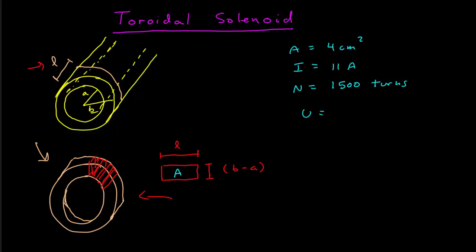The energy stored in an inductor is one half times the inductance times the current through the inductor squared. We want to first find the self-inductance of the solenoid. The self-inductance is the number of turns times the average flux per turn, divided by the current i. So we can write this as L times i squared.